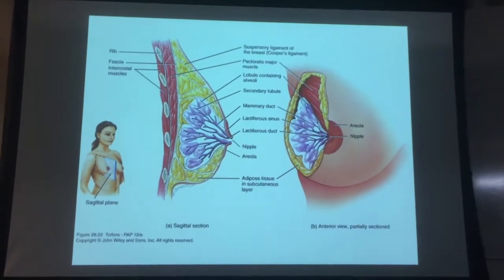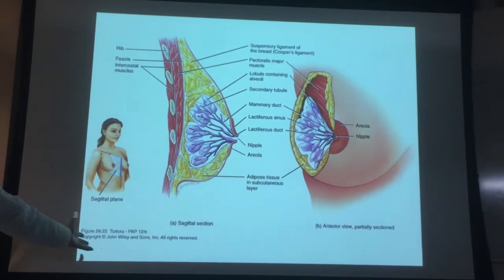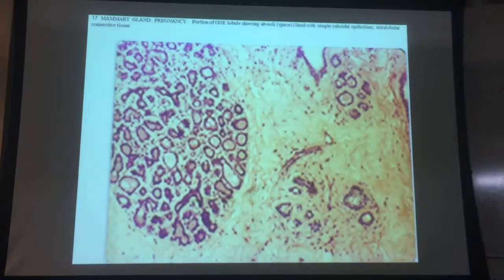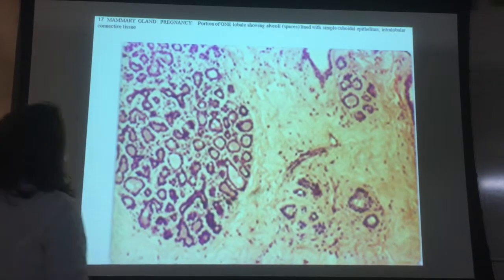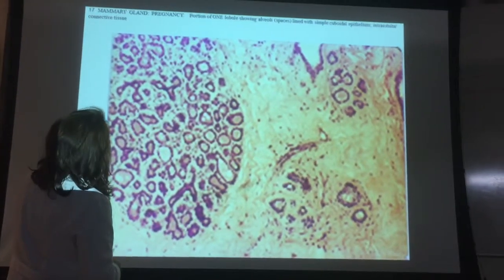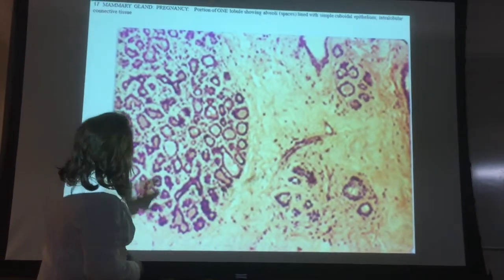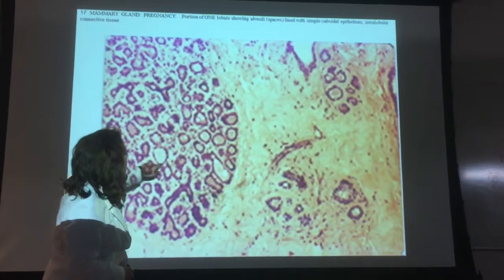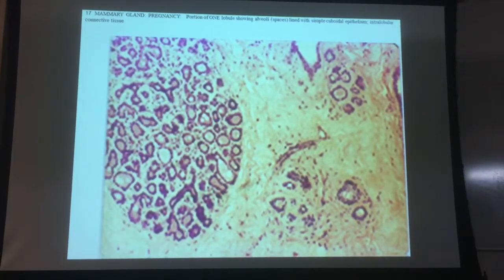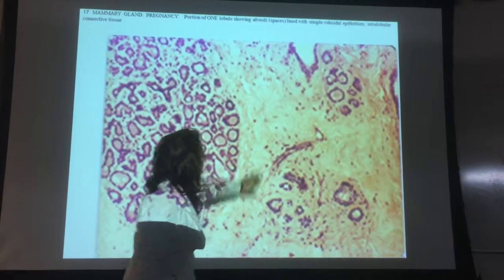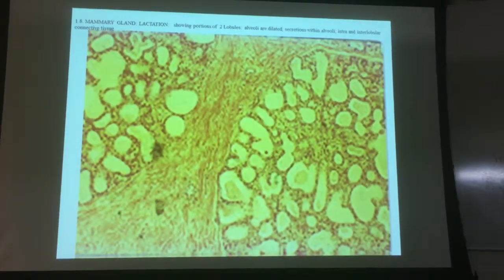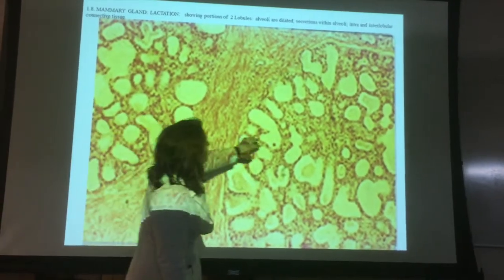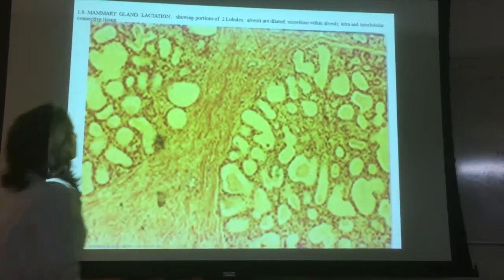These are mammary glands. Here's the mammary gland with pregnancy — here are the spaces called alveoli, and they're lined with simple cuboidal epithelium. This is the connective tissue here. And this is mammary gland with a woman who's lactating, and the alveoli are much larger because they're filled with milk.